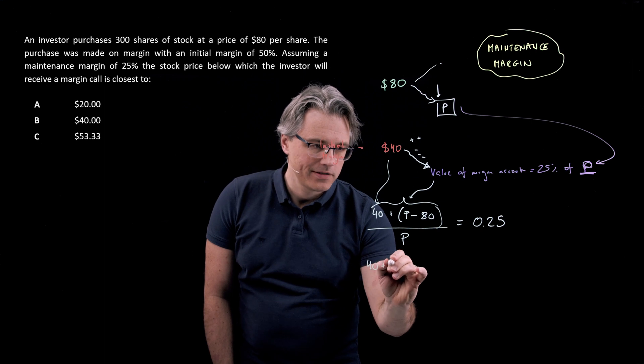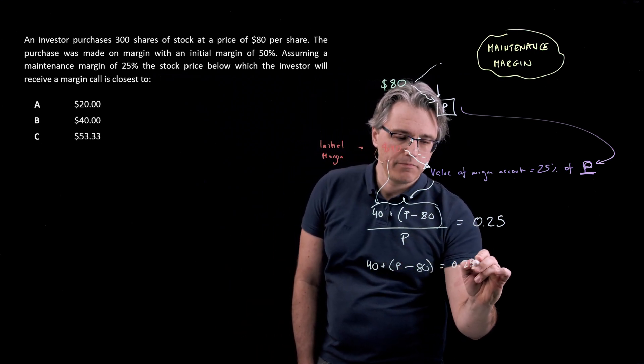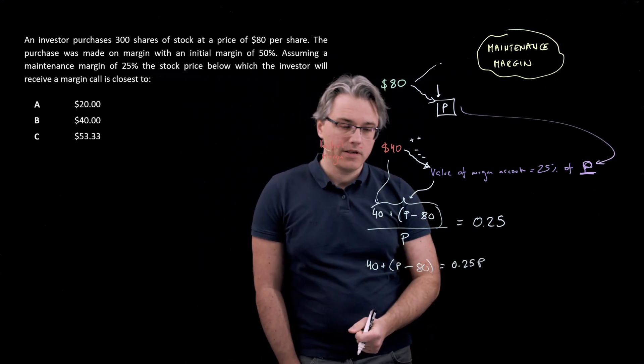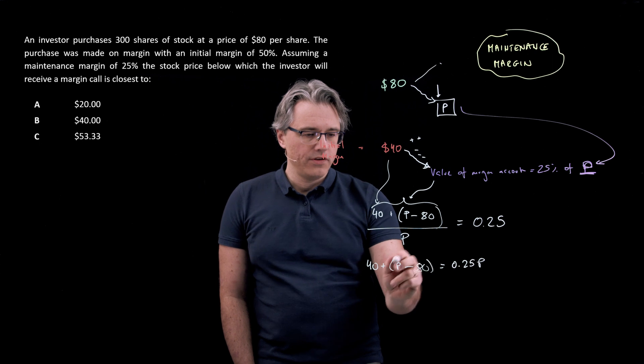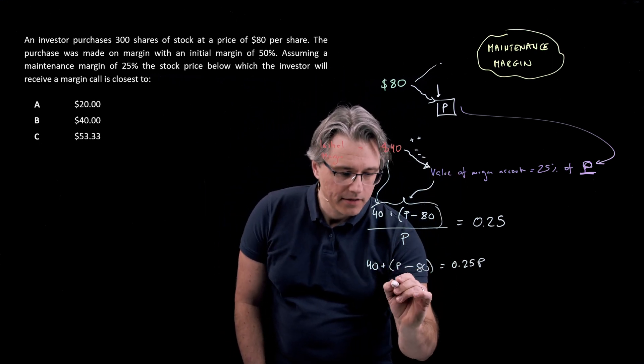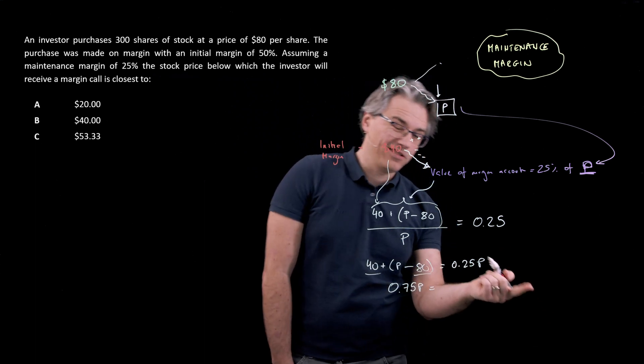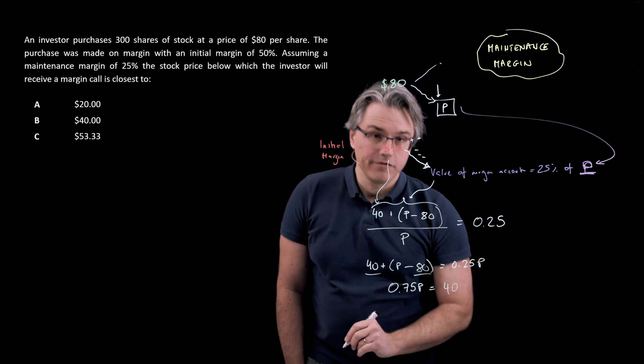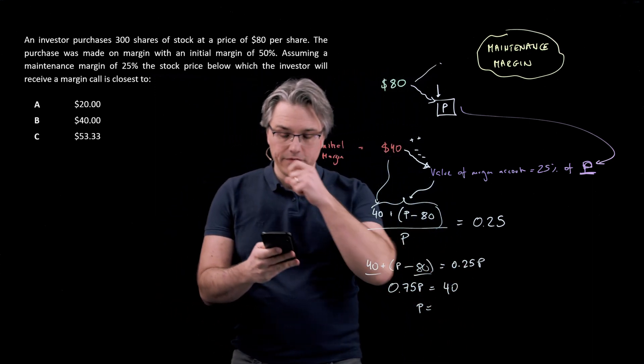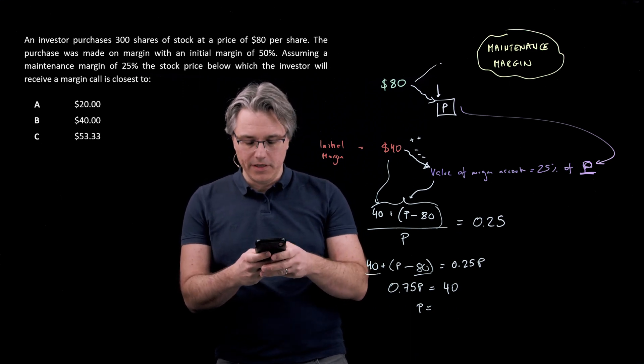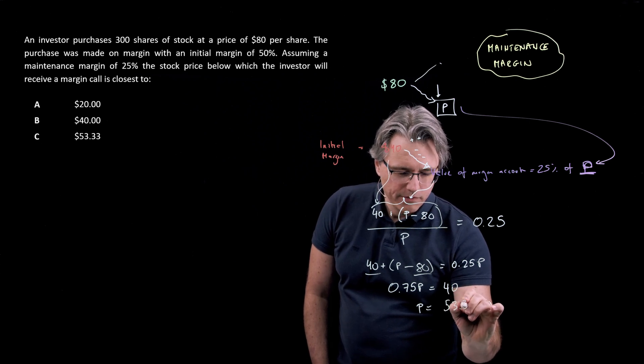We're going to have 40 plus, in brackets or without brackets, it doesn't really matter, 40 plus P minus 80 equals 0.25P. P is the price, the current level of price. And very simple transformation here. If I take this 0.25P over to this side, where I've got just one P, I'm going to get 0.75P equals to, I'm going to take the 40 and 80 to the other side of the equation, ending up with 40 or $40. So now solving for P is saying, well, what's 40 divided by 0.75. And I'm going to show you my calculator. This is really a very easy thing to do. 40 divided by 0.75 is $53.33.